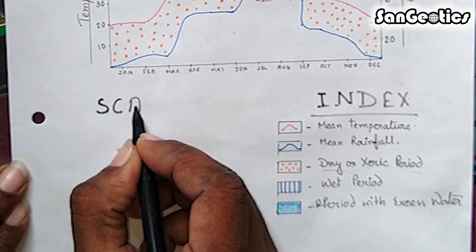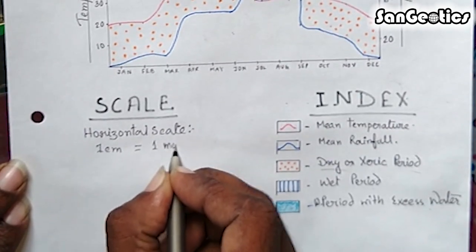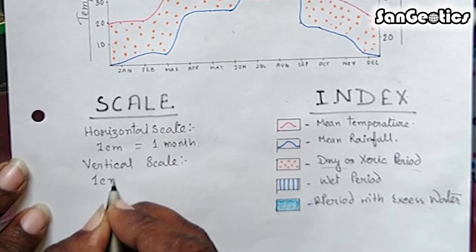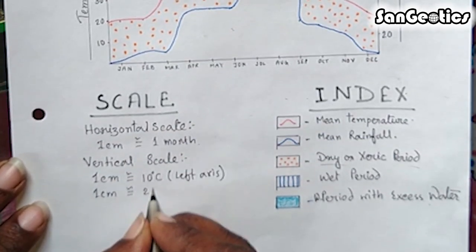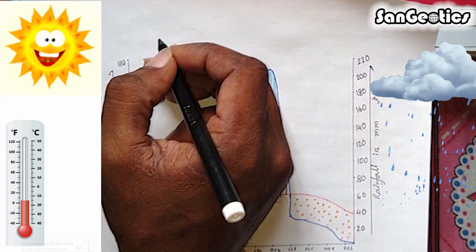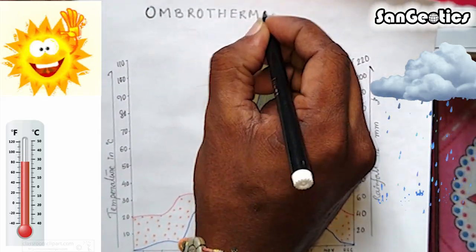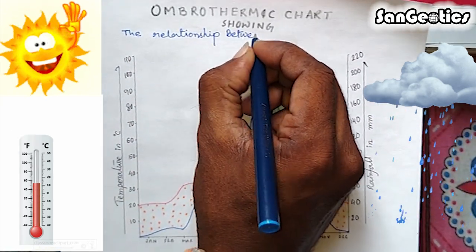You can specify the scale that you have taken. Here horizontal scale of 1 cm represents one month. Vertical scale of 1 cm represents 10 degrees Celsius temperature on left-hand side and 20 millimeters rainfall on right-hand side of y-axis. You can also give a suitable heading as 'Ombrothermic chart showing the relationship between temperature and rainfall.'